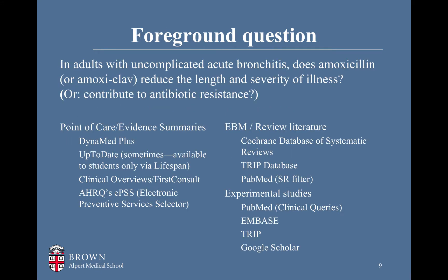Here's an example of a foreground question. You break it down into the patient and/or the problem — in this case, an adult with uncomplicated acute bronchitis — the intervention, amoxicillin or amoxiclav, and an outcome you're looking for, such as reducing the length and severity of illness. You might also be looking at a public health type question, such as: in adults with uncomplicated acute bronchitis, does amoxicillin contribute to antibiotic resistance?